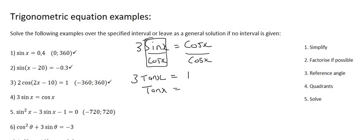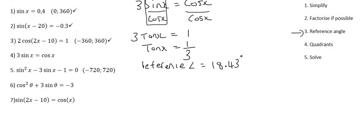Then we get tan x by itself by dividing by three. Now we are already at step three where we can take a reference angle, so we say shift tan of one over three, and if you do that you're going to get a reference angle equal to 18.43 degrees.